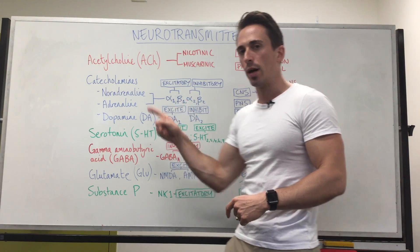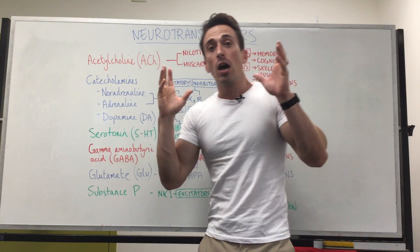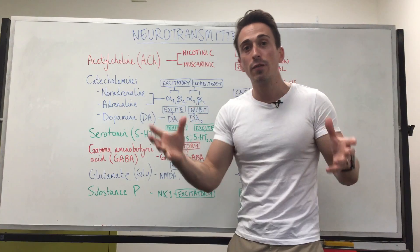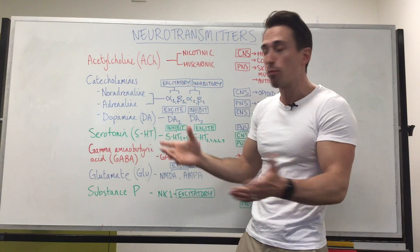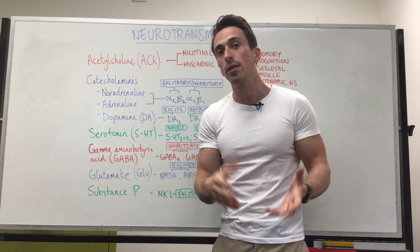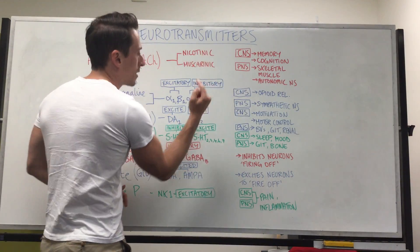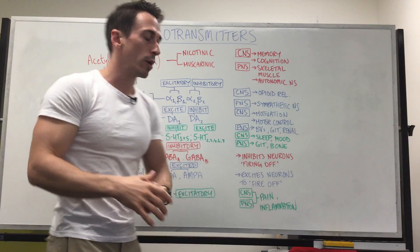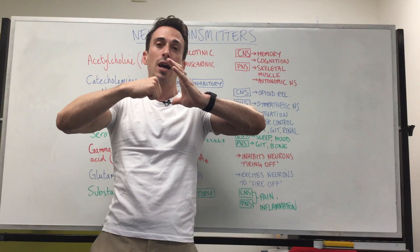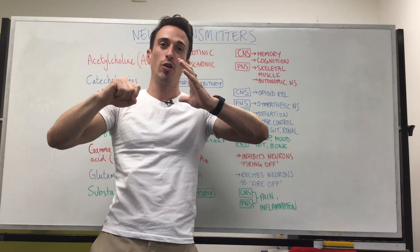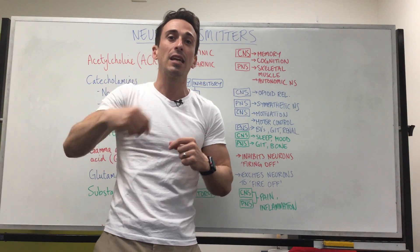Alpha 1 and beta 1 are excitatory. Alpha 1 is found on our blood vessels — when noradrenaline binds to alpha 1, blood vessels constrict, increasing blood pressure. Beta 1 is found in the heart — when noradrenaline binds to it, it increases heart rate and increases the contractile force of the heart. Alpha 2 and beta 2 are inhibitory. Alpha 2 is found on post-synaptic neurons and auto-regulates the sympathetic nervous system, stopping it from firing off any more signals — like a negative feedback system.